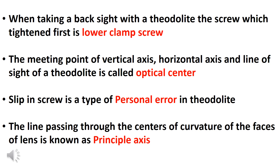The line passing through the centers of curvatures of the faces of a lens is known as the principal axis.